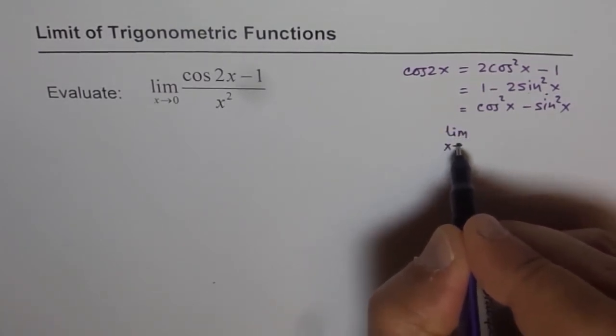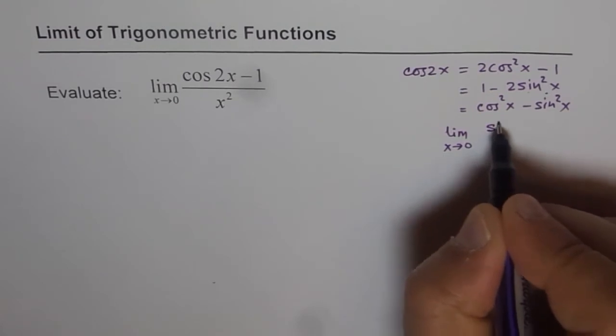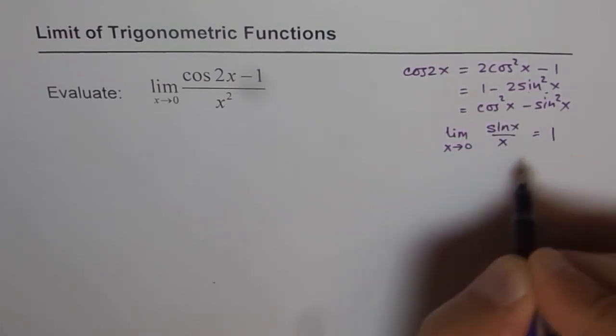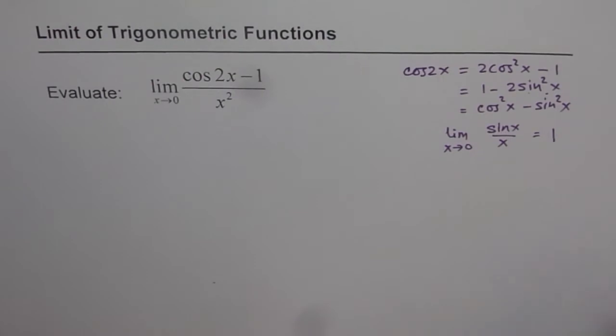Since we know, limit for x approaching 0 of sin x over x is actually 1, we will use this and get our answer. So that is the strategy behind the solution.